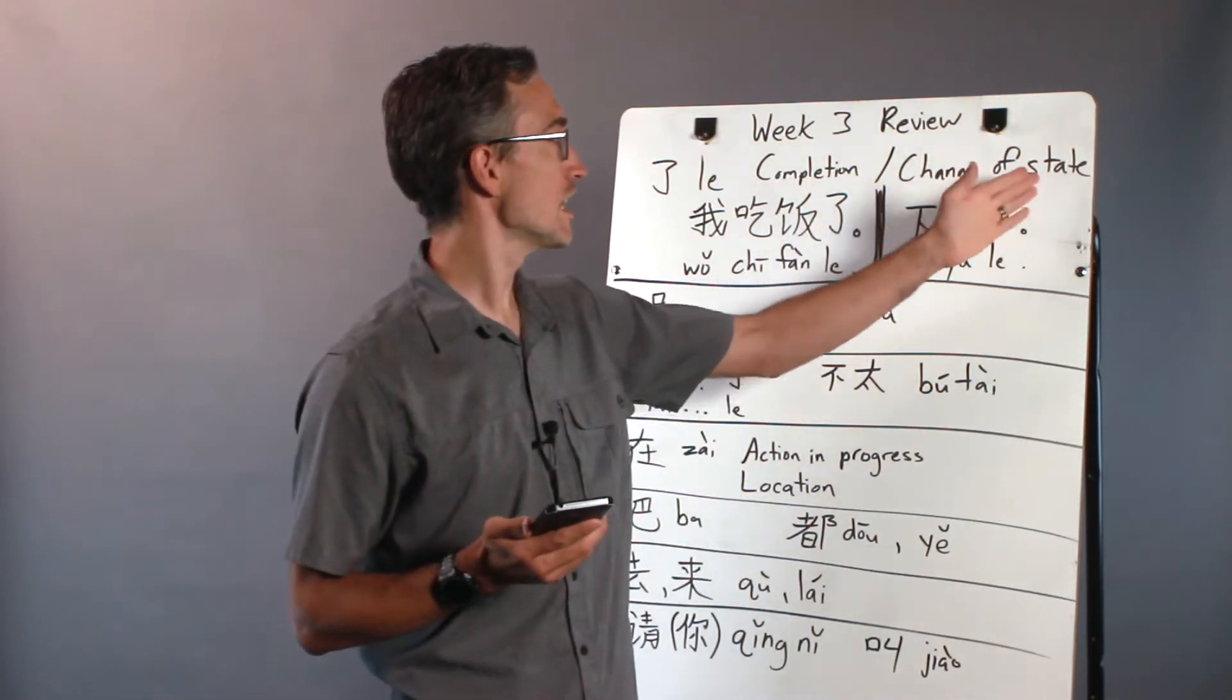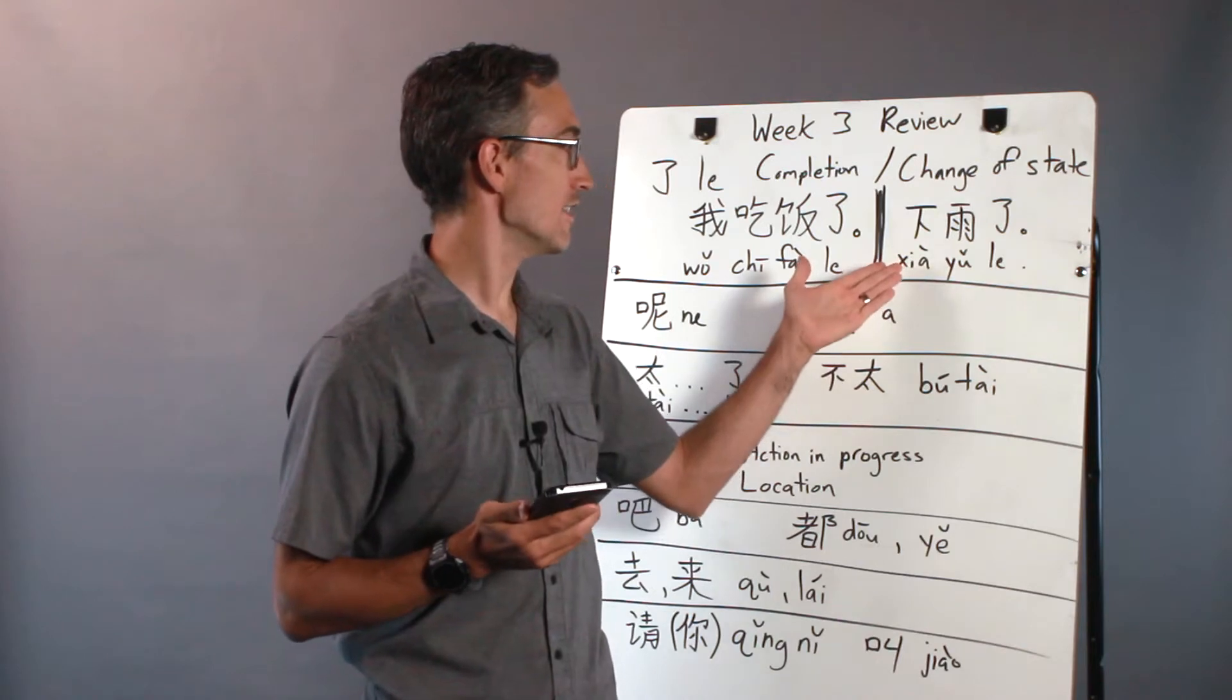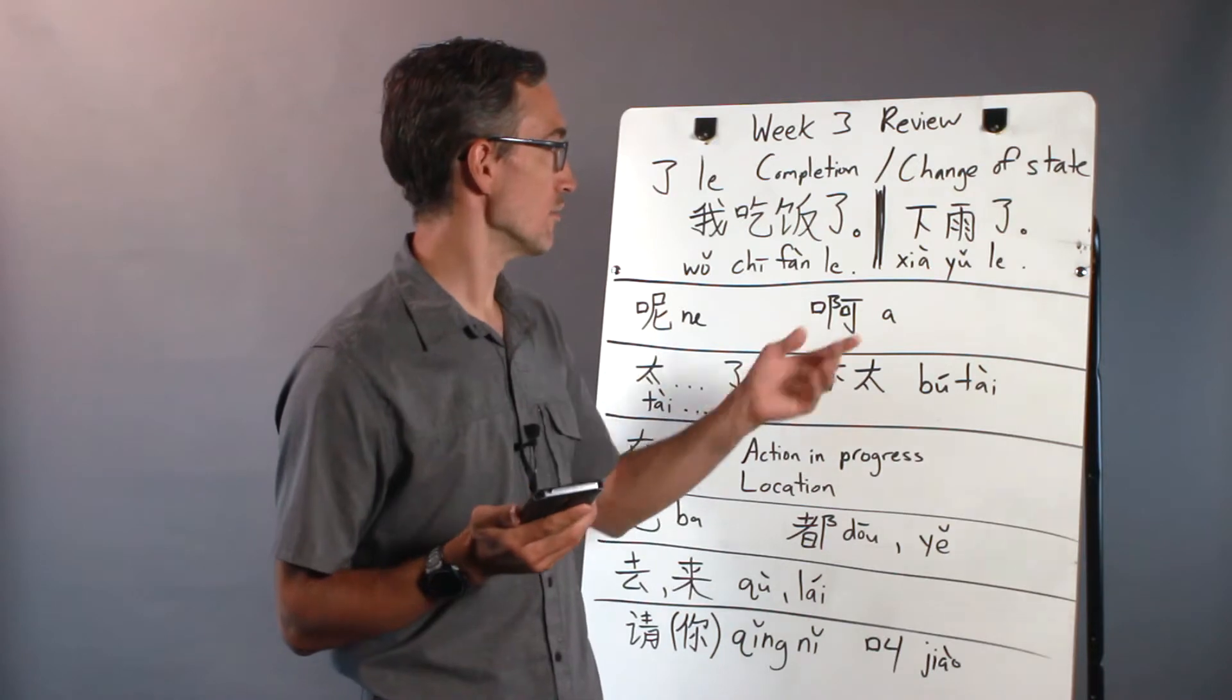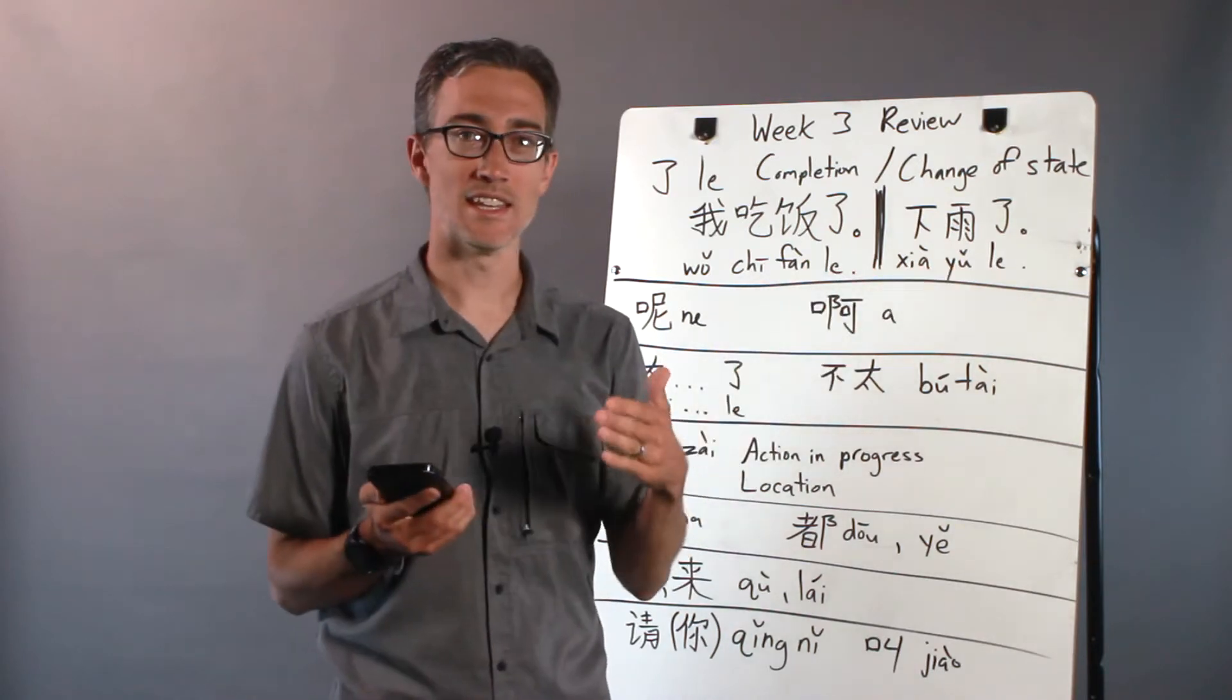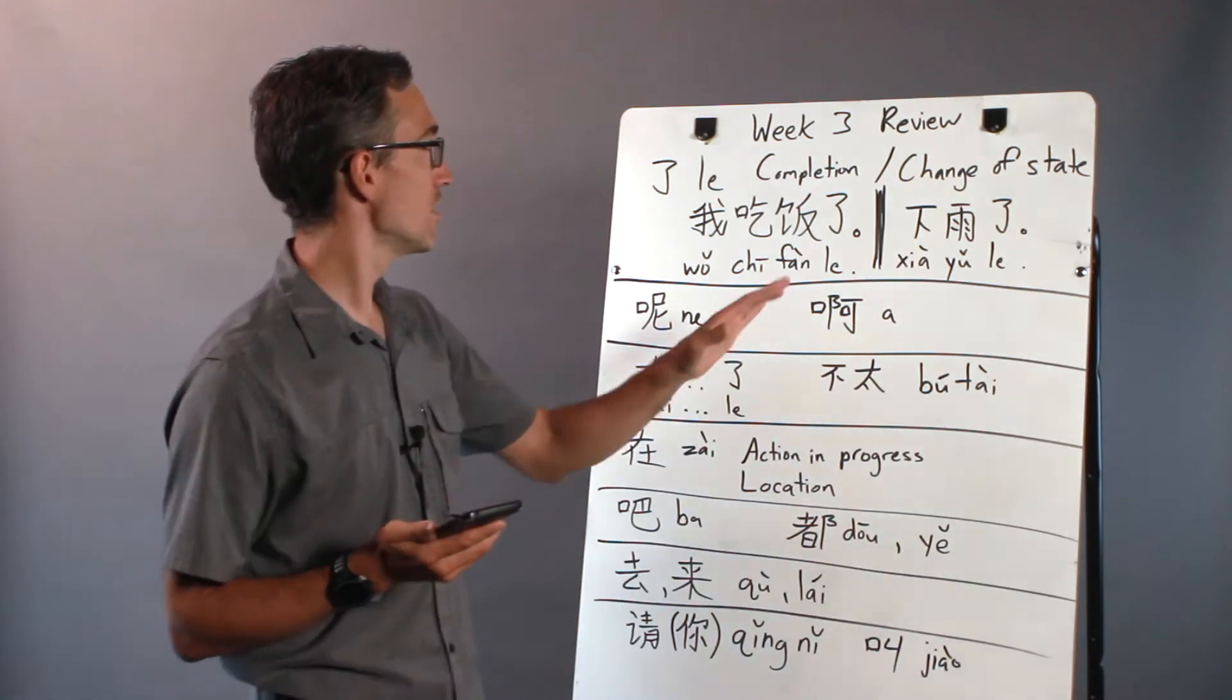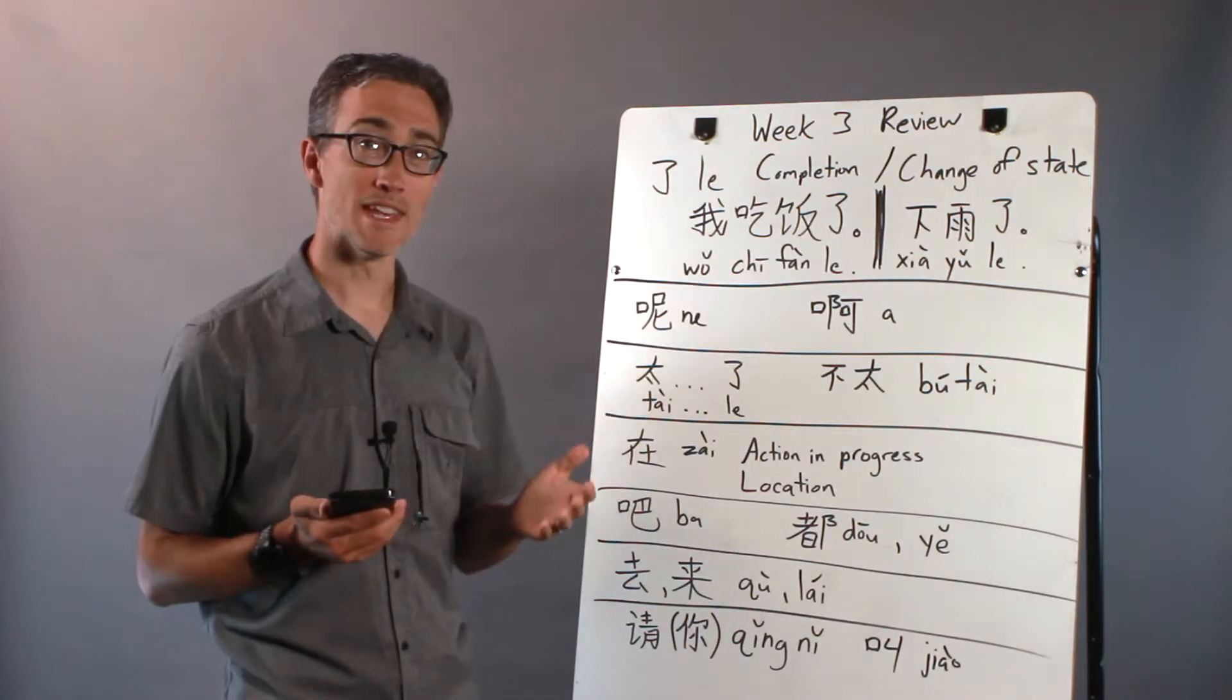And then there's also a change of state. So here the la goes at the end of the phrase and it means that something is now true that wasn't true before. 下雨了 means it is raining, it is now raining, it has begun to rain. So la indicates a change of state or completion of a verb in many cases.